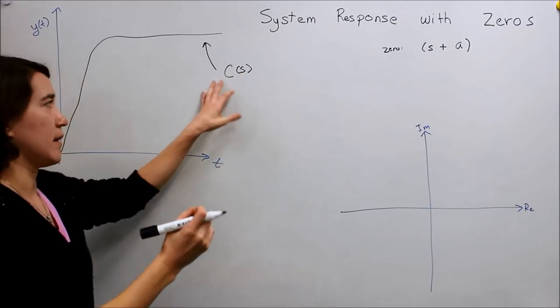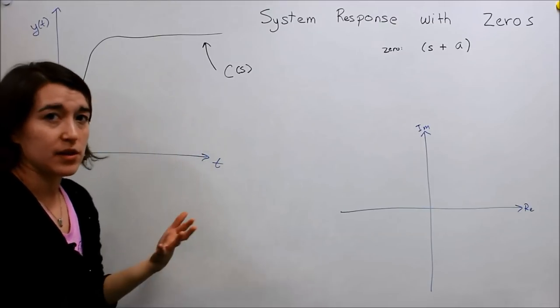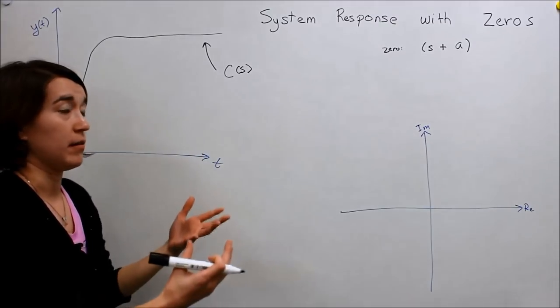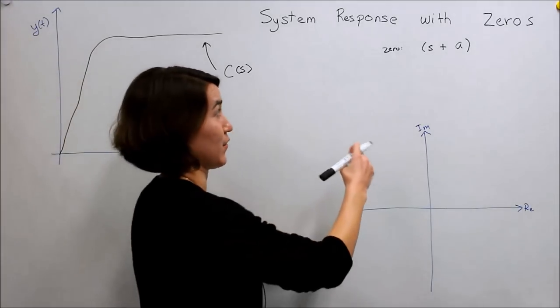And if we added, so maybe this is a second order system, and if we add a zero, essentially what we do is multiply it by our zero in the transfer function.